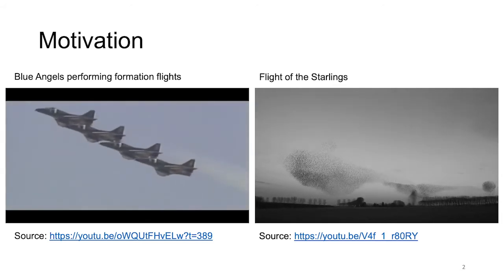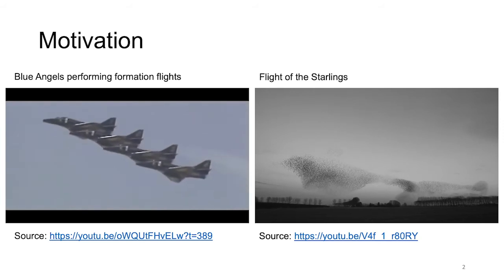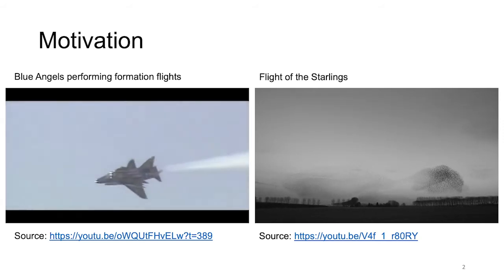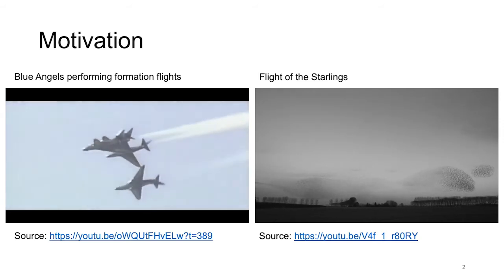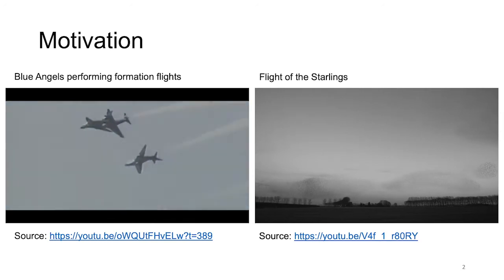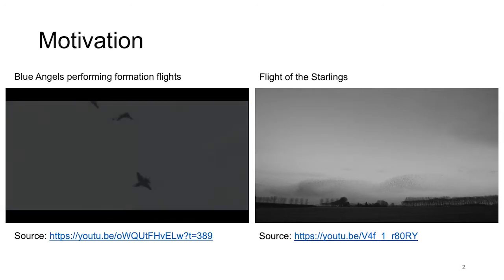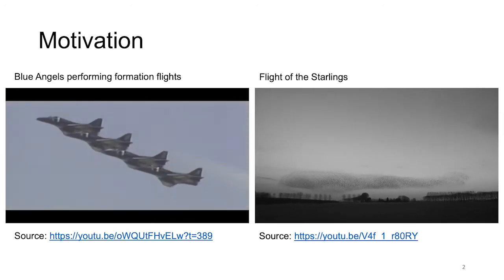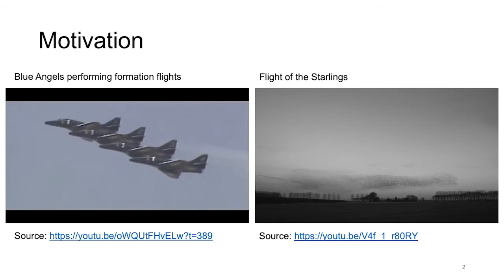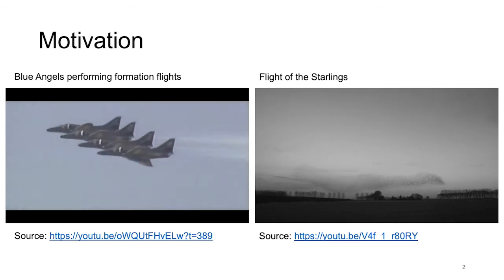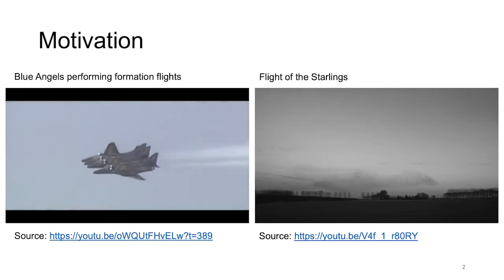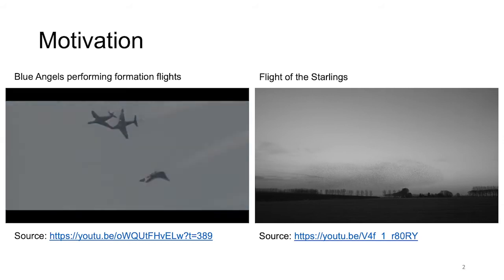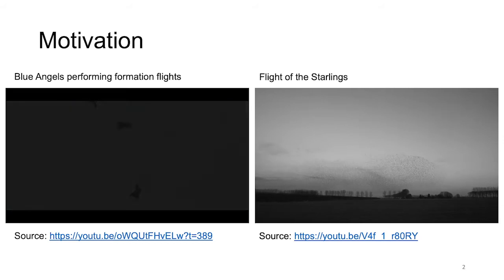Furthermore, on the left we have an obvious team leader, while in a natural flock system it is hard to tell whether there is one, and certainly not which one it is. We asked ourselves: can we use learning to implement multi-robot systems that strive to achieve the latter?